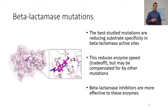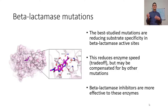Reducing specificity lowers enzyme speed, but other mutations can increase enzyme speed if the active site is a little looser — these are compensatory mutations. There are also beta-lactamase inhibitors, which inhibit beta-lactamase and thus increase the efficacy of penicillin. Adding a drug to a drug gives more efficacy.